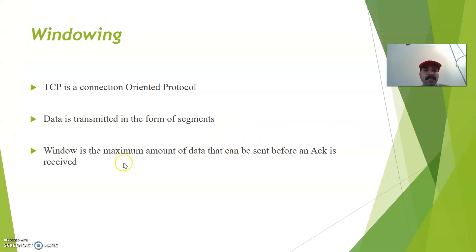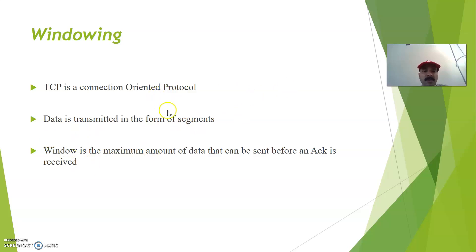So what is windowing? Windowing is the maximum amount of data that can be sent before an acknowledgement is received. In TCP, it will send a single segment and receive an acknowledgement from the receiver. But windowing is nothing but sending a group of segments at a time, then receiving an acknowledgement from the receiver.